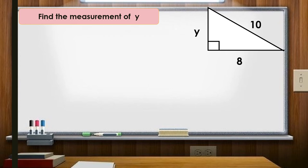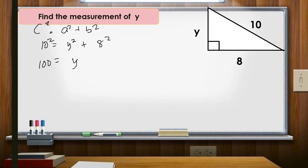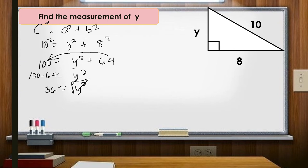Find the measurement of y. We use the Pythagorean theorem: c² = a² + b². The hypotenuse is 10, and a leg is 8. So 10² = y² + 8², which gives 100 = y² + 64. Transposing: y² = 100 − 64 = 36. Taking the square root, y = 6. Therefore y = 6 units.